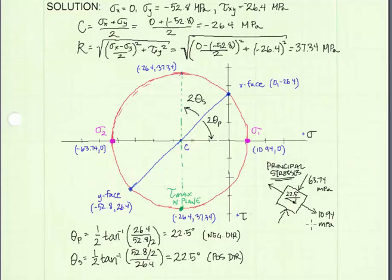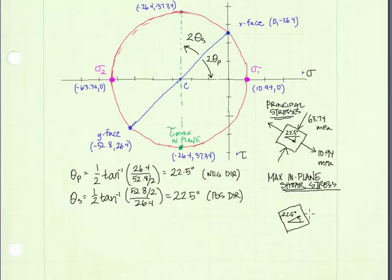Now I've drawn the element that represents the principal stress state. That is an element rotated clockwise by an angle of 22.5 degrees. We can see that the x-face becomes the sigma 1 face at 10.94 megapascals, and the y-face becomes sigma 2 at negative 63.74 megapascals.